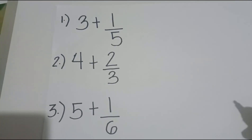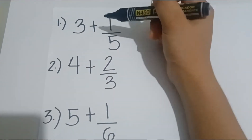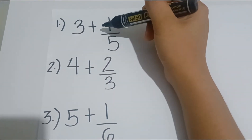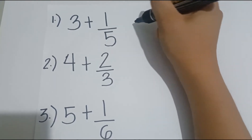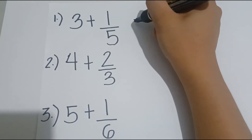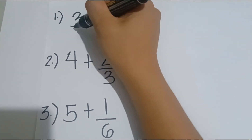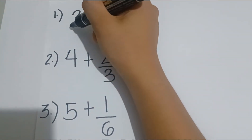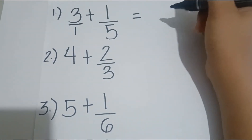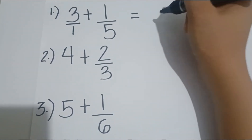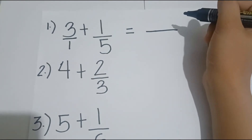Let's have the following examples. Number 1: 3 plus 1 fifth. For the solution, we need to find the LCD. First, we give 3 the denominator of 1. So the LCD is equal to 5.